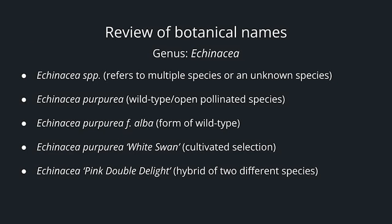Here's a review of botanical names and what you may see. If referring to multiple or an unknown species, we would use Echinacea spp. If it's the open-pollinated species, it's Echinacea purpurea. The white-flowered form would be Echinacea purpurea forma alba. An example of a cultivated selection could be Echinacea purpurea White Swan. Or if it's a hybrid of two different species, you would no longer use purpurea — it would simply be Echinacea Pink Double Delight.